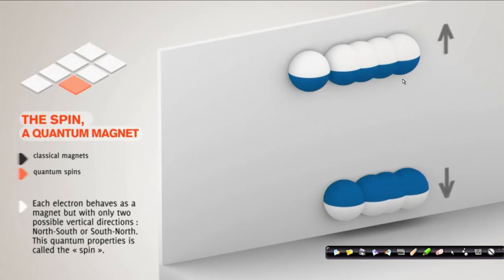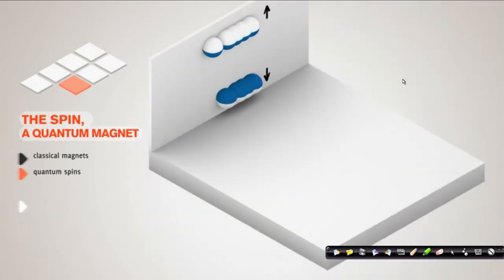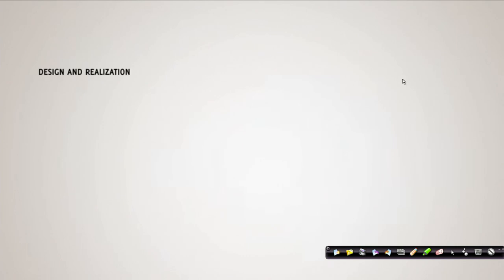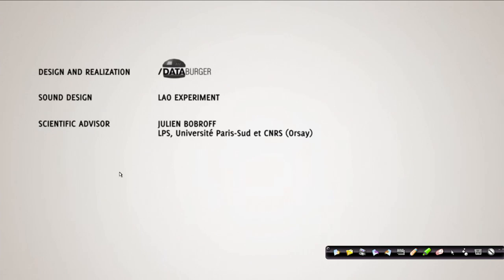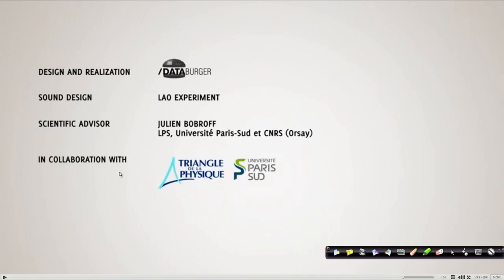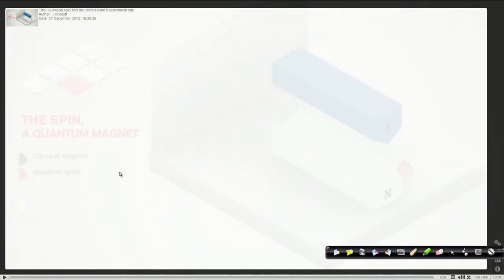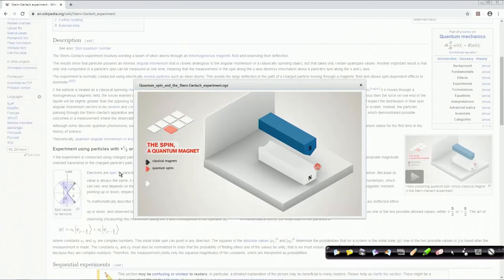These two different orientations we popularly call alpha spin and beta spin. In this case, what we see is that this electron behaves like a quantum magnet. I gratefully acknowledge the contribution of the creators of this beautiful animation, which gives a nice insight about the Stern-Gerlach experiment.